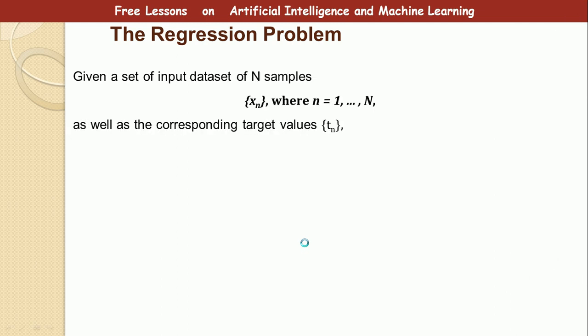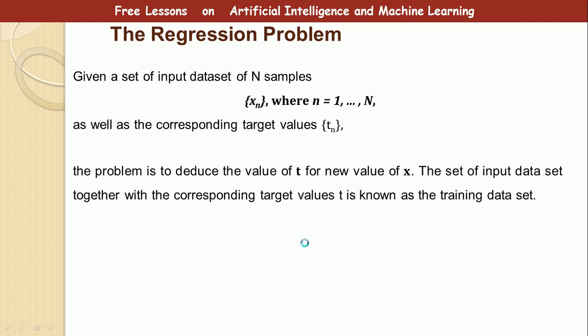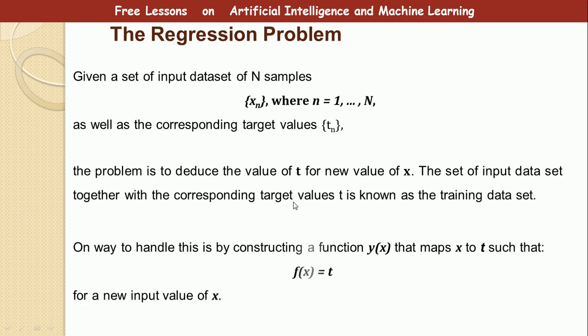But now we will have a problem if we are going to use that function. Let's say we are given a set of input data set of n samples. We have xn for n is equal to 1 to n. We are also given a corresponding target variable tn. The problem for regression is that we need to deduce the value of t for a new variable x. The set of input data sets together with the corresponding target values t is known as the training data set. One way to handle this is by constructing a function that maps x to t, so that f of x is equal to t. So we keep having the same challenge. We need to derive this function to map the input variable to the output variable.